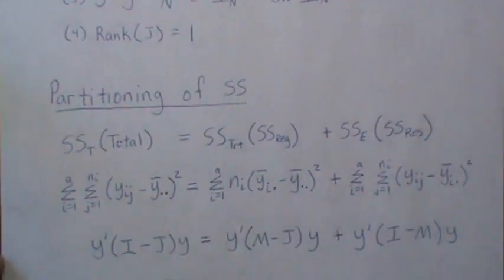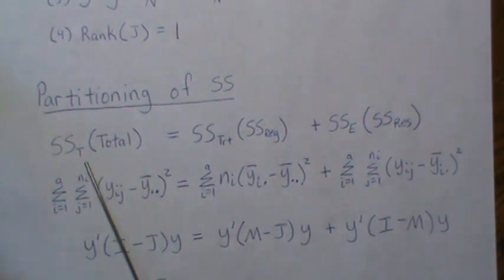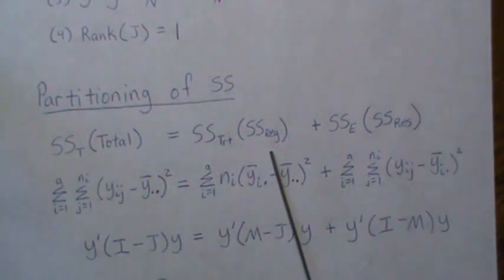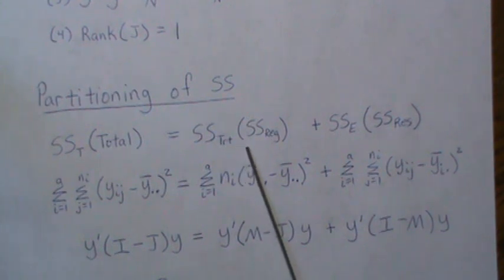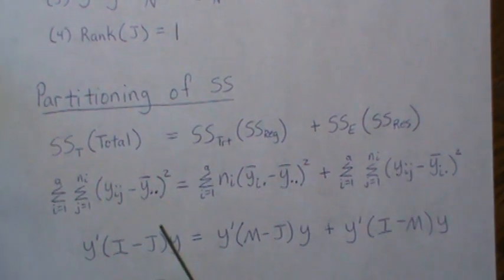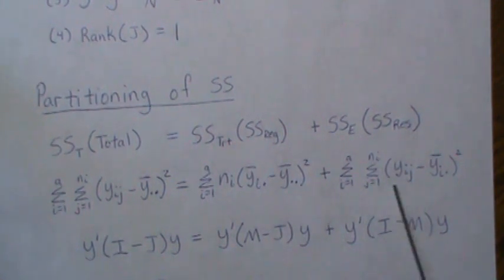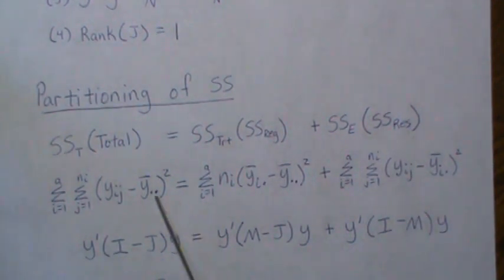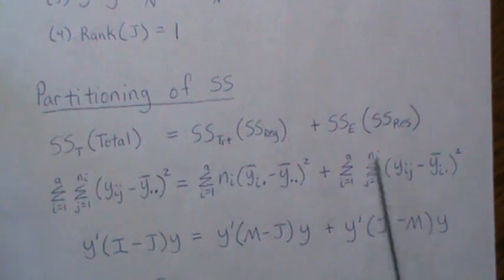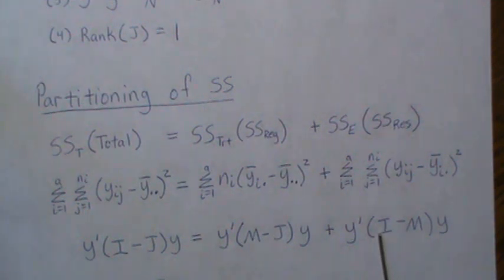When we partition the sum of squares, we have the total sum of squares, the regression (treatment) sum of squares, and the error (residual) sum of squares. In scalar notation these are the familiar formulas; in matrix notation they are written using those projection matrices M and J, with I being the identity matrix.